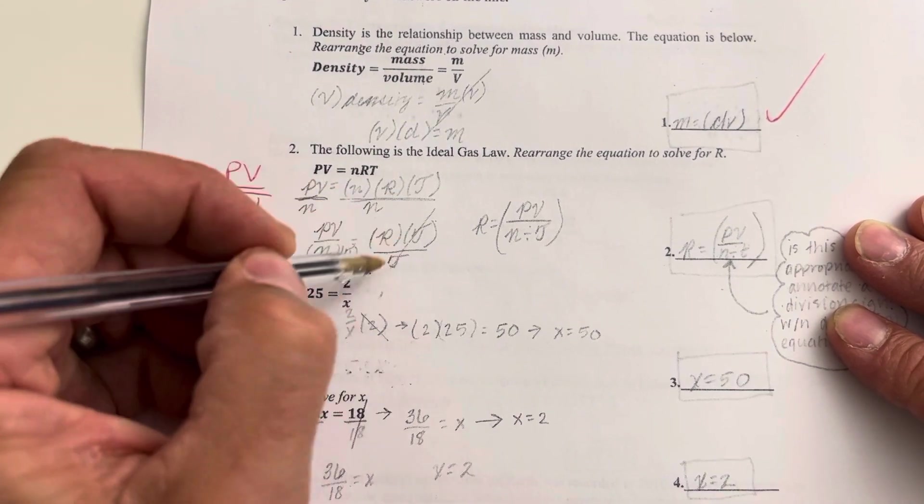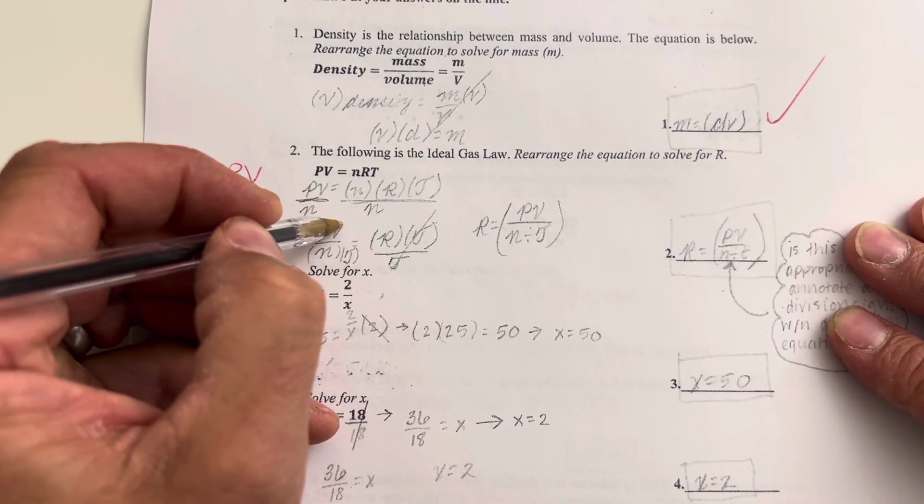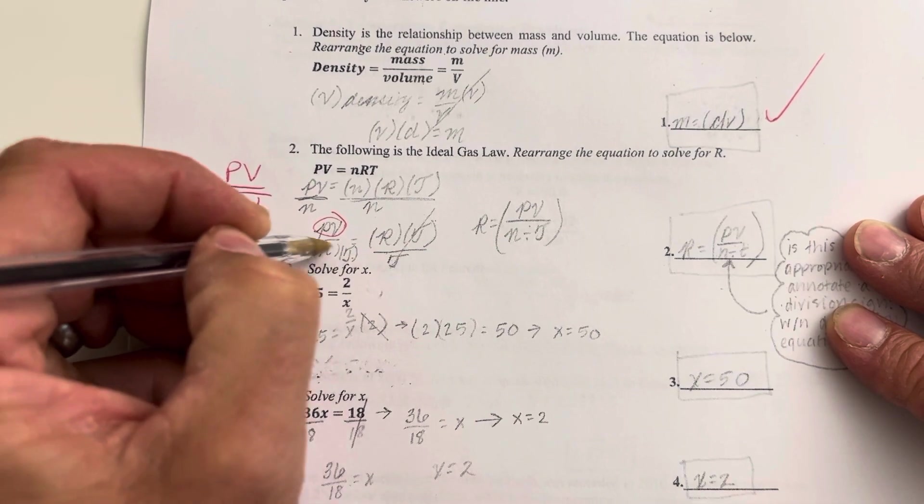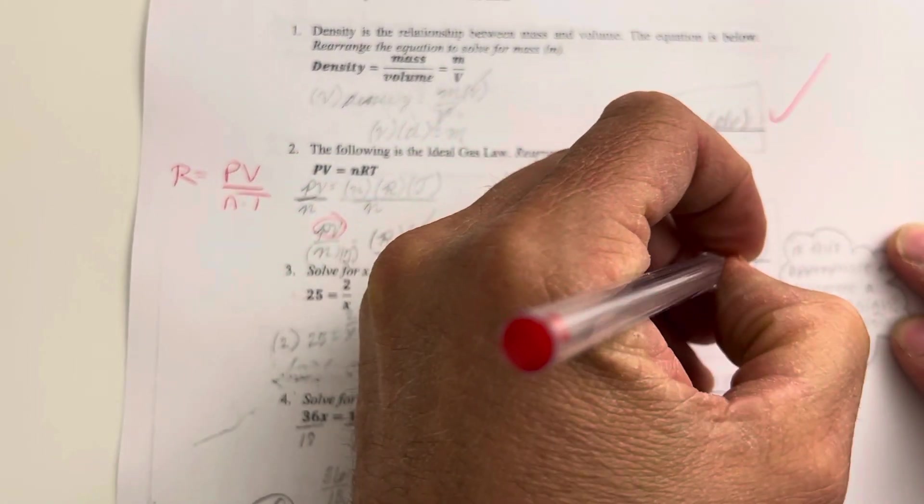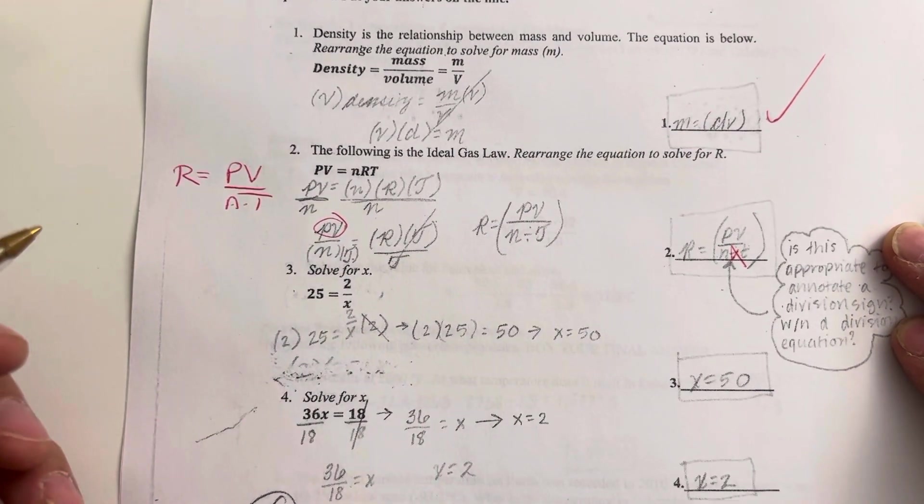and then when you divide by T, you're dividing PV by T, you're not dividing the denominator again. So it's actually n multiplied by T, so this is not n divided by T.